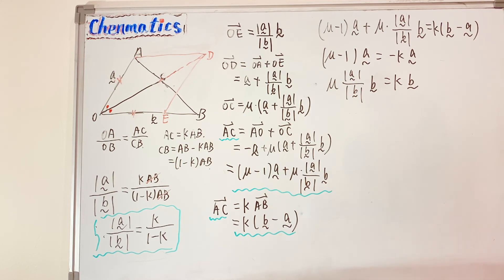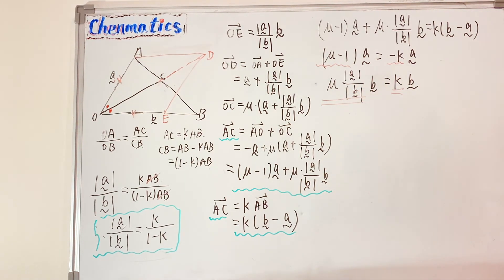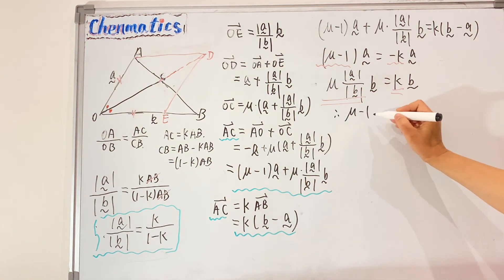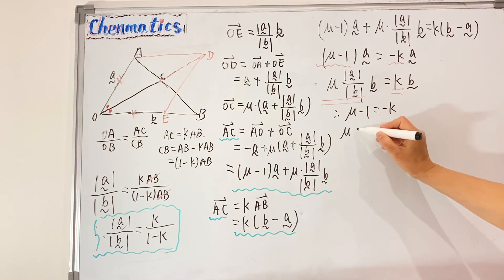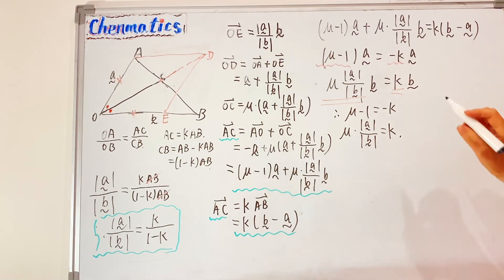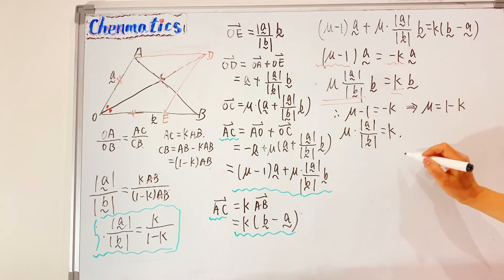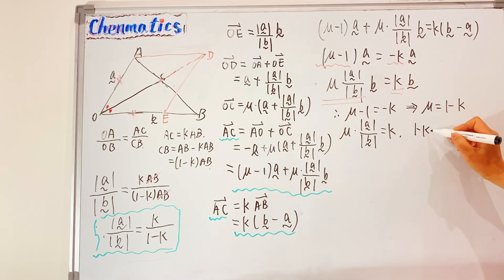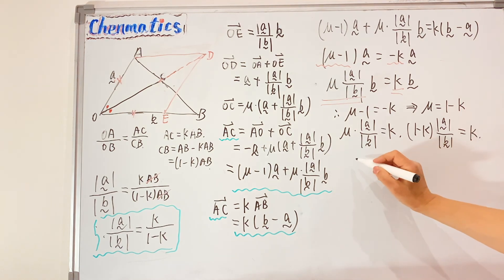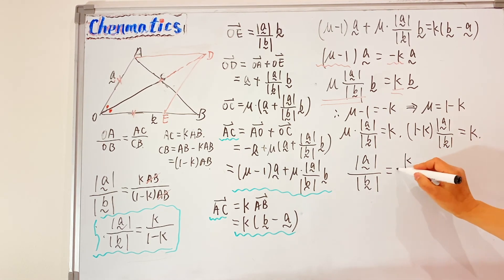From the first equation, mu equals 1 minus K. Substituting into the second equation gives (1 minus K)·(|A|/|B|) equals K. Rearranging, we get |A|/|B| equals K over (1 minus K).